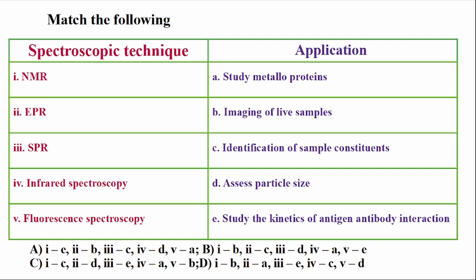The spectroscopic techniques listed are: NMR, EPR, SPR, Infrared Spectroscopy, and Fluorescent Spectroscopy. Their applications include: study of metalloproteins, imaging of live samples, identification of sample constituents, assessing particle size, and study of the kinetics of antigen-antibody interaction.